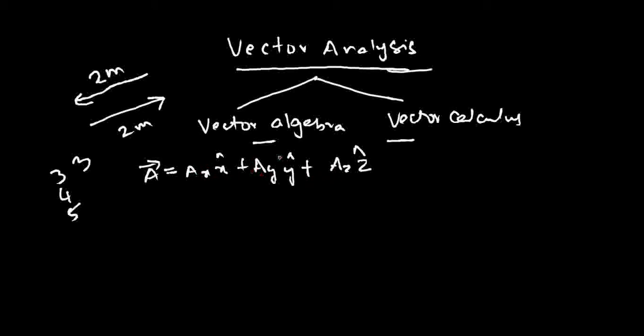So AX, AY, AZ get a value only if they are associated with X cap, Y cap, Z cap. Otherwise they are just numbers. I just told you that scalars are just numbers. Now let's construct this vector A bar.